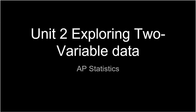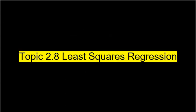Welcome to Unit 2, Exploring 2-Variable Data for AP Statistics. We are in the middle of Topic 2.8, Least Squares Regression. We already watched Part A, and now we're going to move on to Part B.